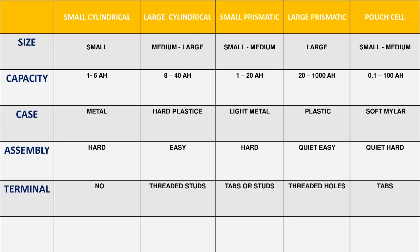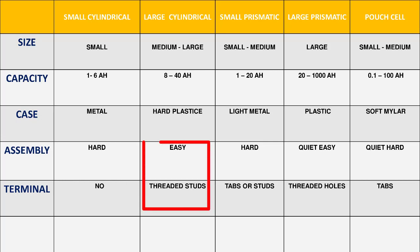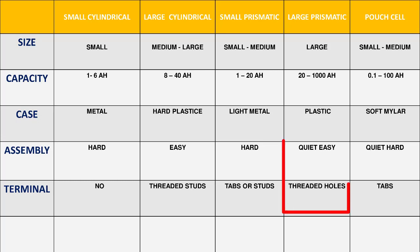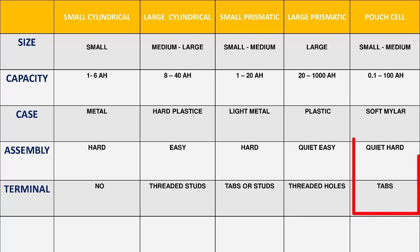Now let's see the terminals. For the small cylindrical cell, there is no such identical terminal, so the assembly process is very hard. For the large cylindrical cell, there are threaded studs, so the assembly process is easy. For the small prismatic cell, we have tabs or studs as terminals, so the assembly process is hard. In large prismatic cells, we have threaded holes, so the assembly process is quite easy. For the pouch cell, we use tabs, so the assembly process is quite hard.